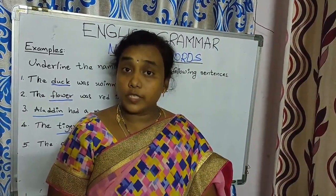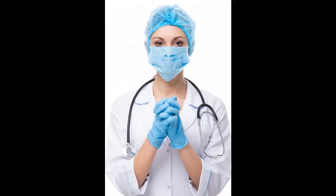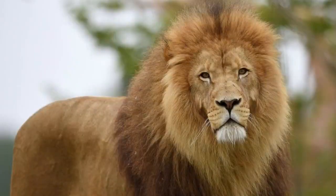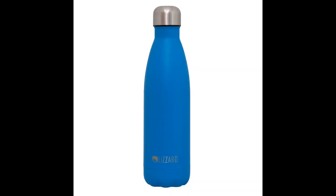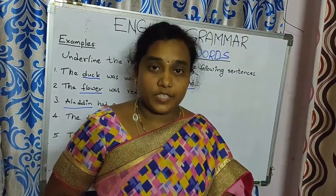Now I am going to show you some naming words. Can you tell me? Who is she? She is a doctor and she is a person. What is this? This is a market and it is a place. What is this? This is a lion and it is an animal. What is this? This is a bottle and it is a thing. Have you got it children? These are naming words.